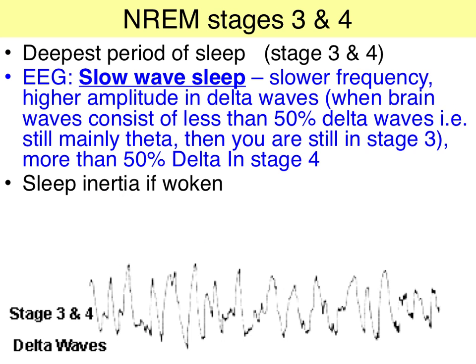Stage 3 and 4 of non-REM sleep are commonly known as slow-wave sleep, because of the minimal level of brain activity as indicated on the EEG — very low frequency, high amplitude brain waves. According to the restorative theory of sleep, it's during this phase that we get significant physiological restoration, whereas REM sleep is important for psychological and cognitive restoration.